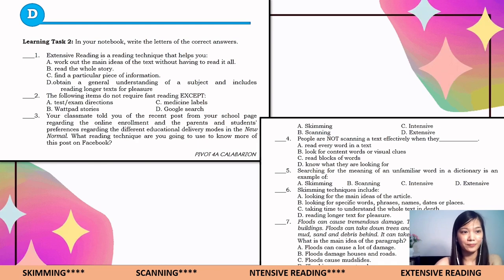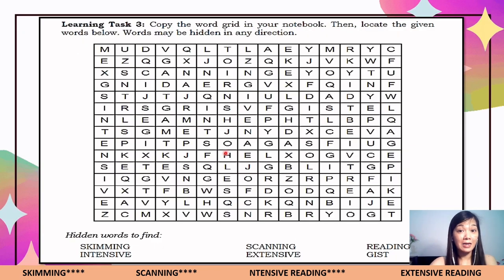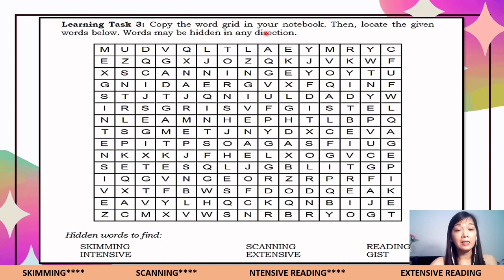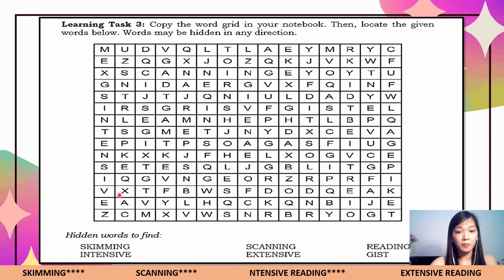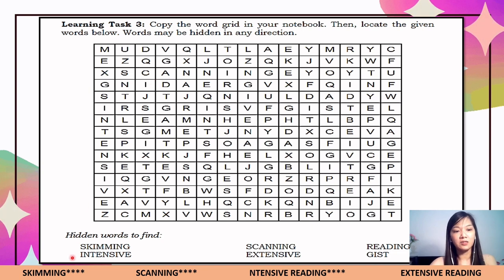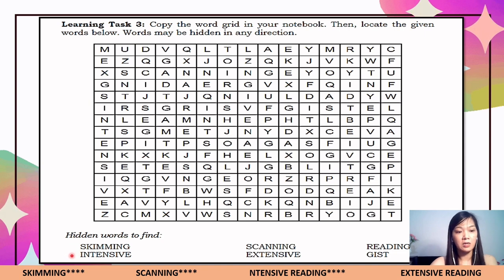For Learning Task Number Three, the instruction is to copy the word grid in your notebook or booklet, then locate the given words below. Words may be hidden in any direction. Copy the word grid in your notebook, and then locate these hidden words: skimming, intensive, scanning, extensive, reading, and gist.